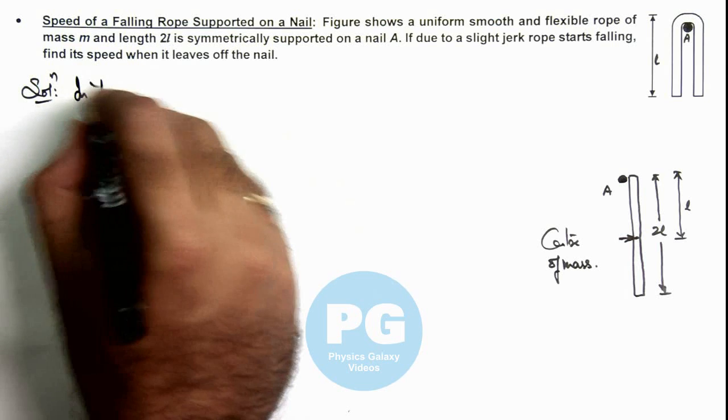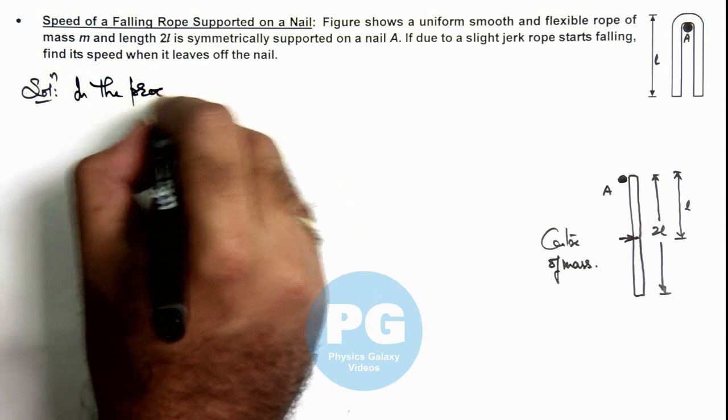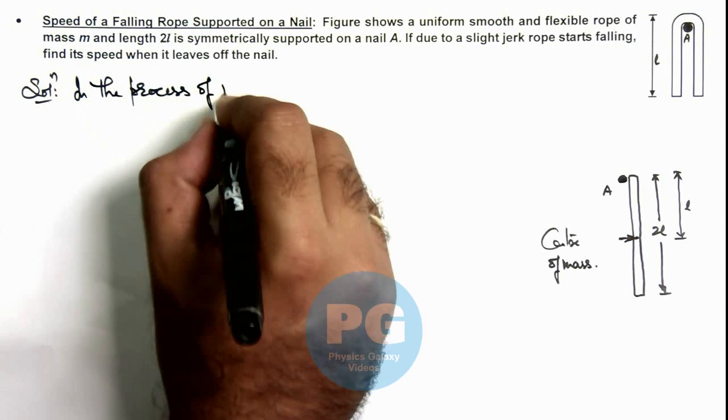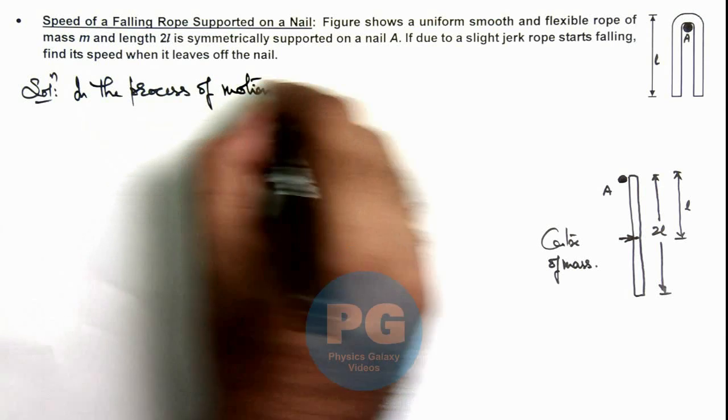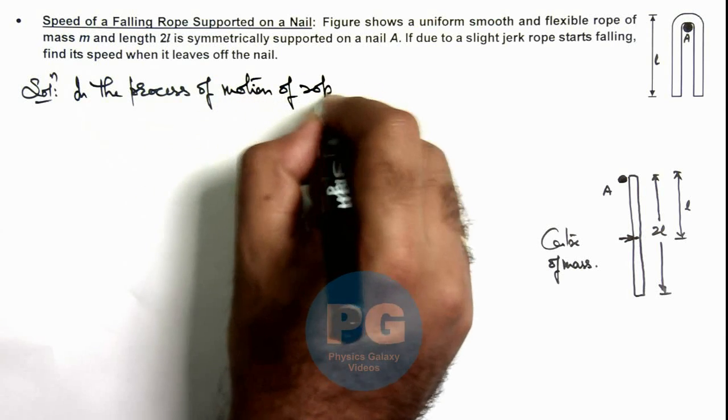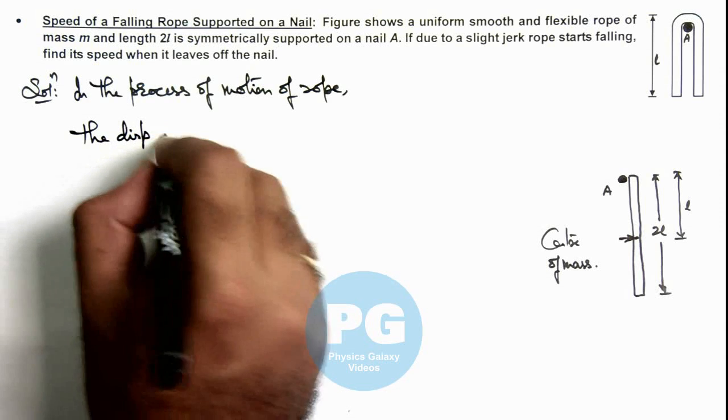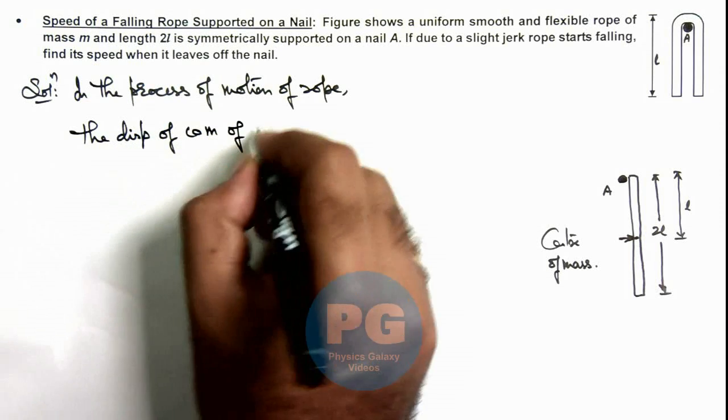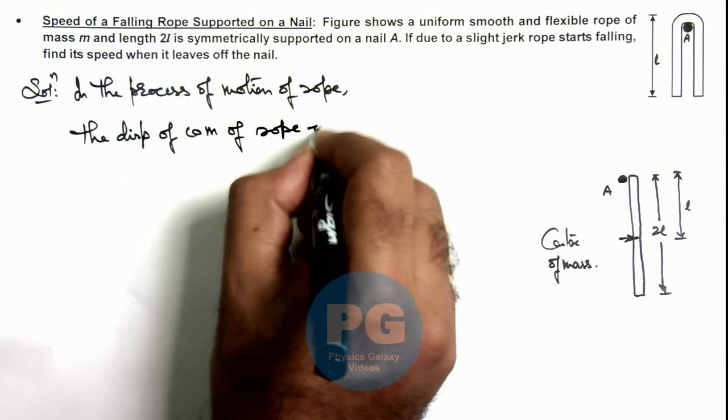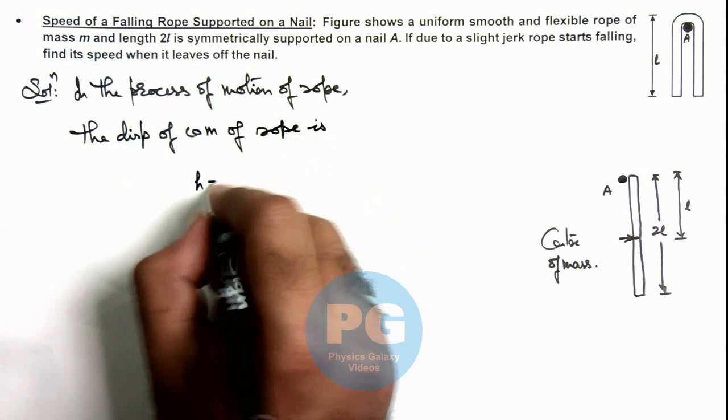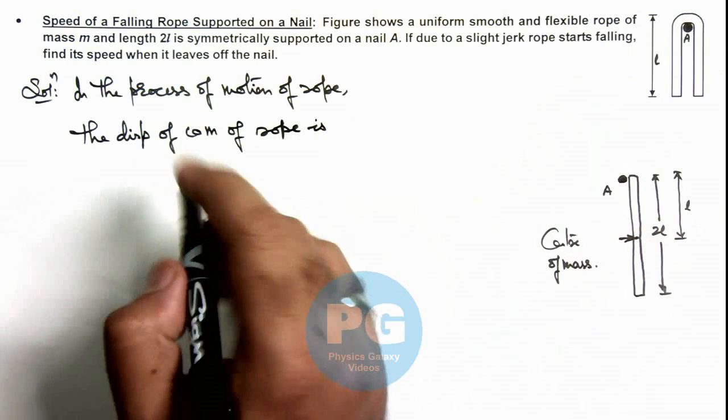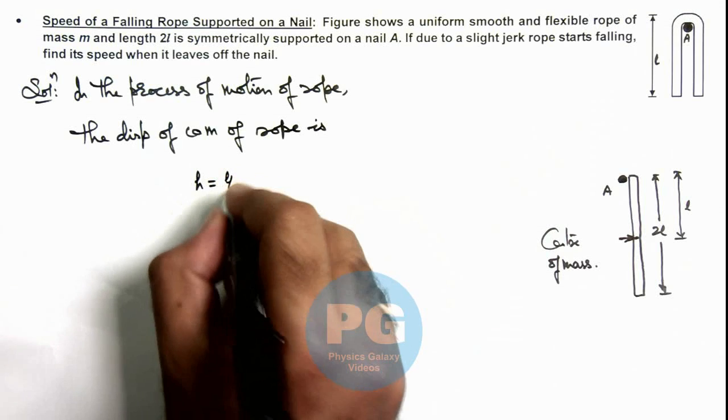in the process of motion of the rope, the displacement of the center of mass of the rope, this h by which the center of mass has fallen down, can be written as l/2.